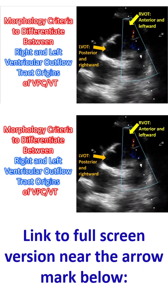Since both outflow tracts are superiorly located, both typically present with an inferior axis, meaning tall R waves in inferior leads 2, 3, and AVF. The primary differentiation lies on the horizontal plane, i.e., the precordial leads.